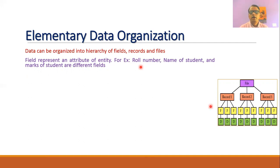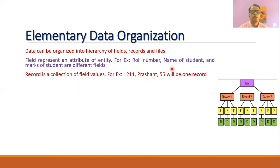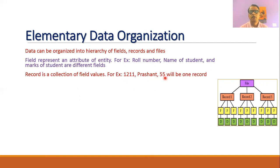We can have any number of fields. For example, we can have three fields: roll number, name of the student, and marks obtained. A record is a collection of field values. So when we enter roll number 1211, name 'Prashant', and marks 55, that forms one record.